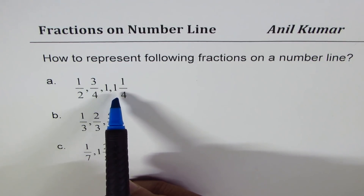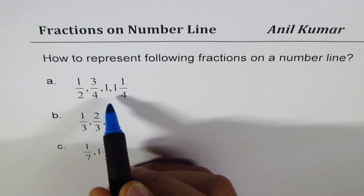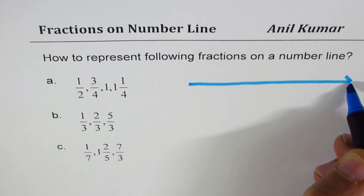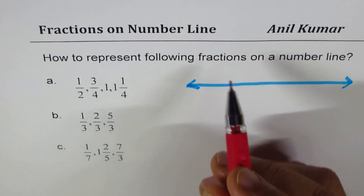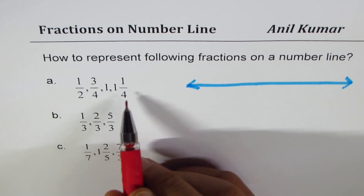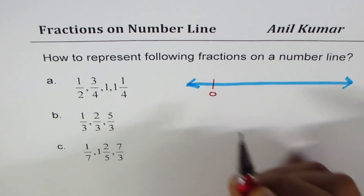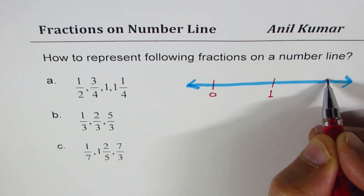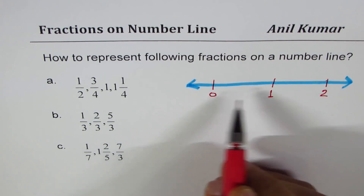We're looking for numbers which are greater than 0, however less than 2. The number 1 and 1/4 is the highest. So we'll draw a number line — a straight line with arrows on both sides. Since we have to represent numbers from half to less than 2, it's a good idea to start with 0, then mark 1, and at equal distance mark another point which we call 2.